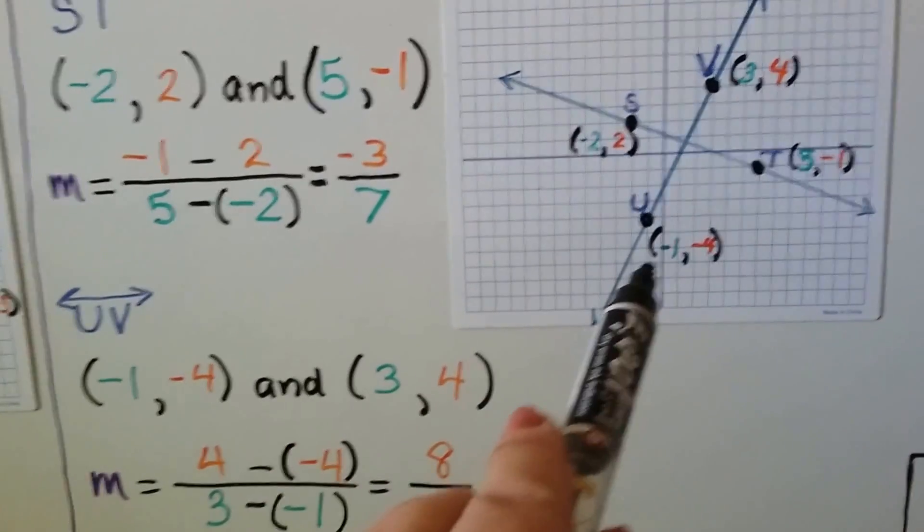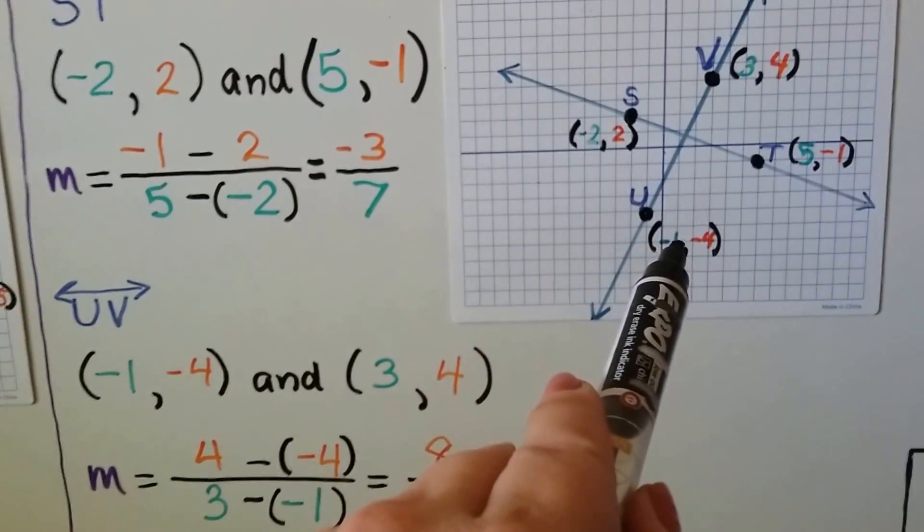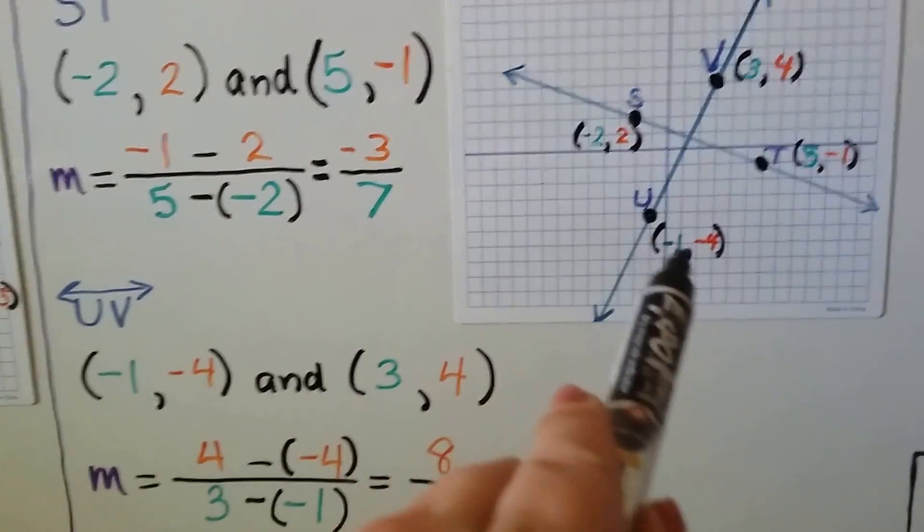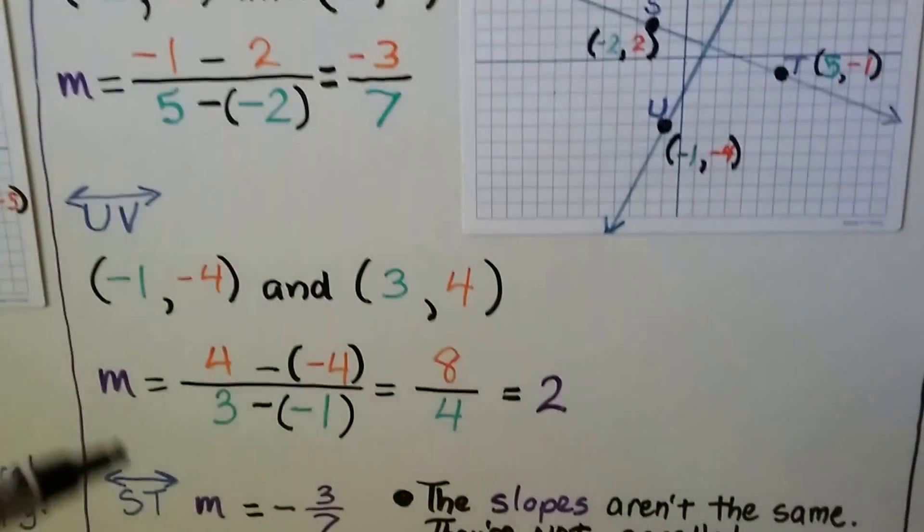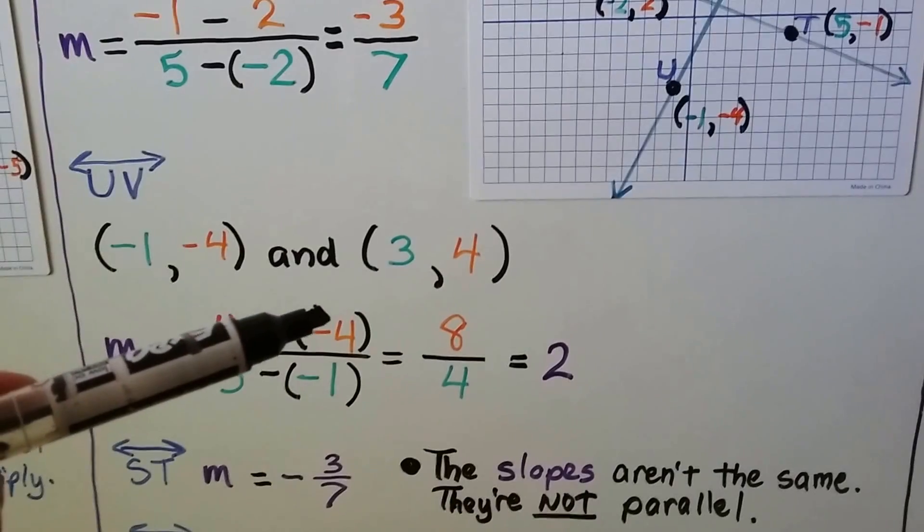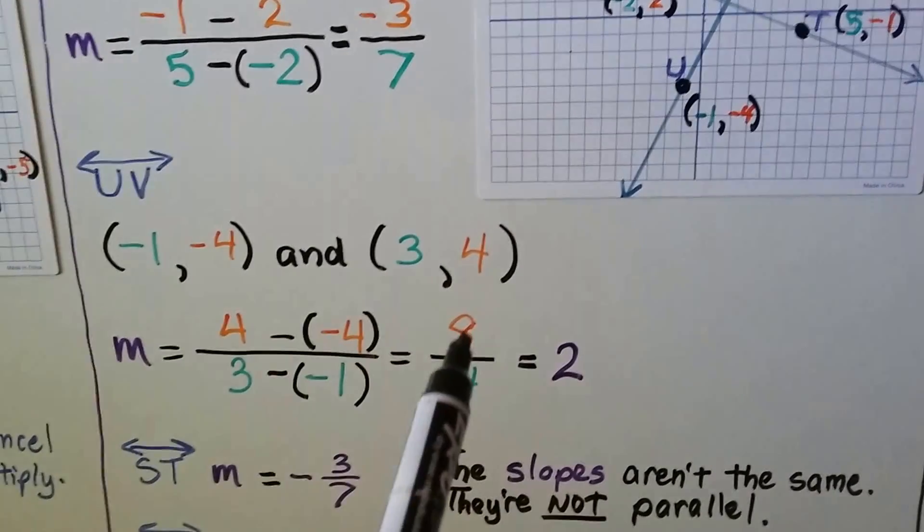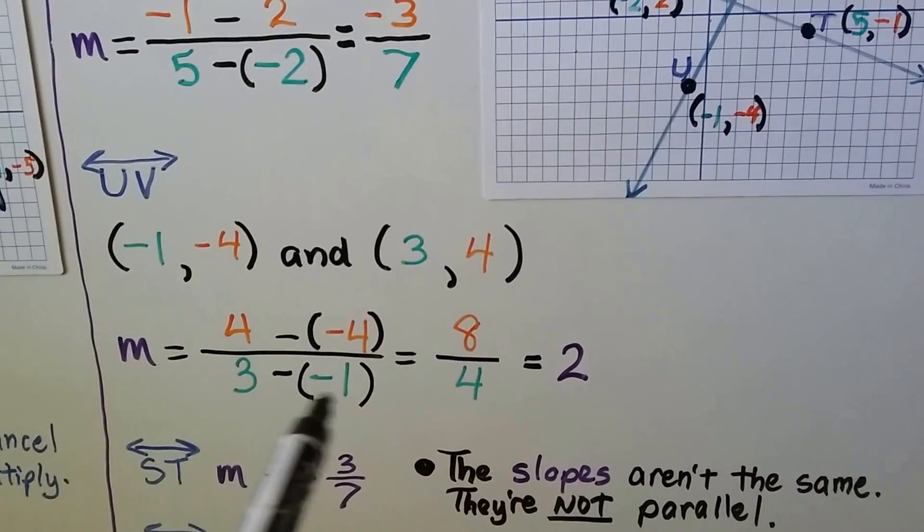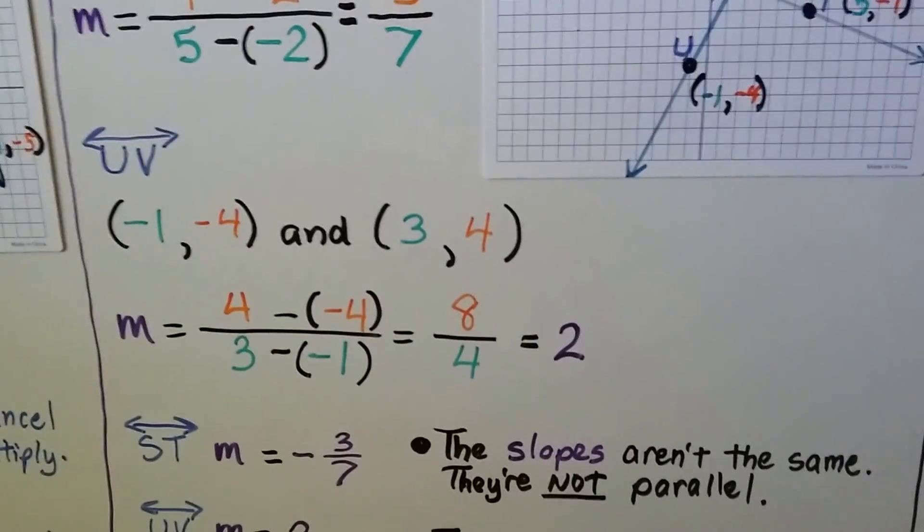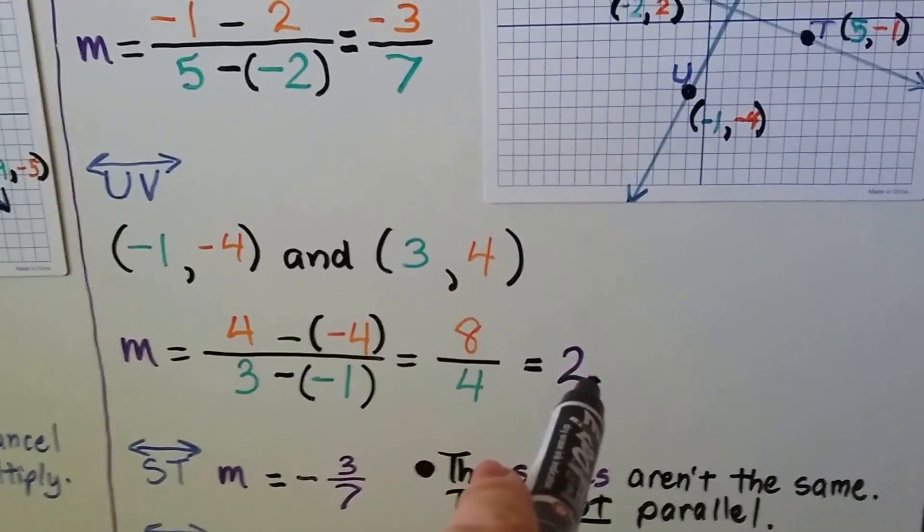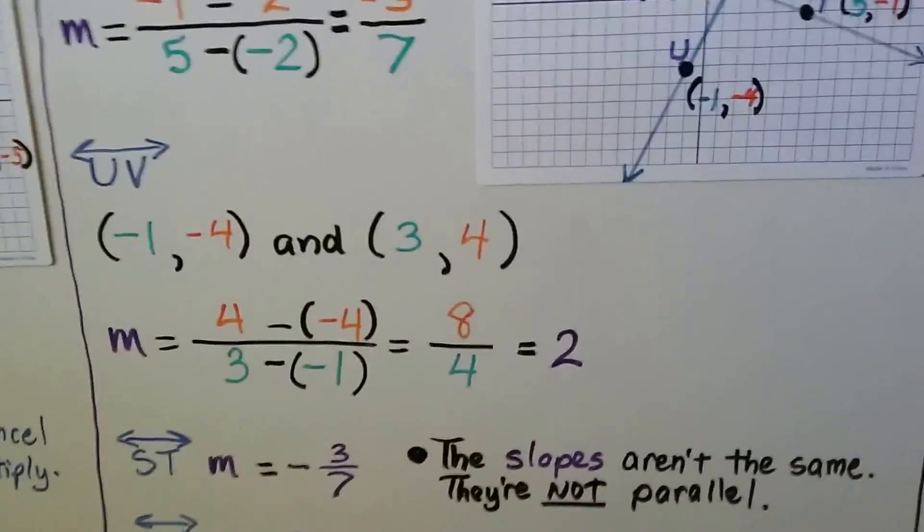Then for line UV, we've got -1 and -4 for U. For V, we've got 3, 4. We do 4 - (-4). Add the opposite, we get 8. We have 3 - (-1). We add the opposite, we get 4. We can simplify this to 2. So we know the slope is 2. This slope is -3/7.